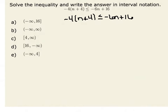There are several ways that I can solve this inequality. One way is to distribute my negative 4 over addition. Therefore, I would have negative 4n minus 16 is less than or equal to negative 6n plus 16.